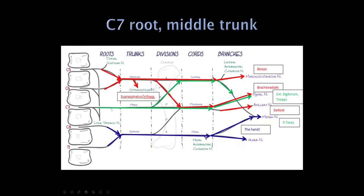Moving to C7: this accounts for more than half of all radiculopathies, so it's really common. C7 goes from the root to the middle trunk to the posterior cord, down to the radial nerve. Key muscles weak here are extensor digitorum (finger extension) and triceps — triceps being the key muscle. The C7 root also contributes a division to the lateral cord and down to the median nerve; this is one of the exceptions. Since C7 radiculopathies are so common, it's worthwhile knowing that this contribution supplies pronator teres.